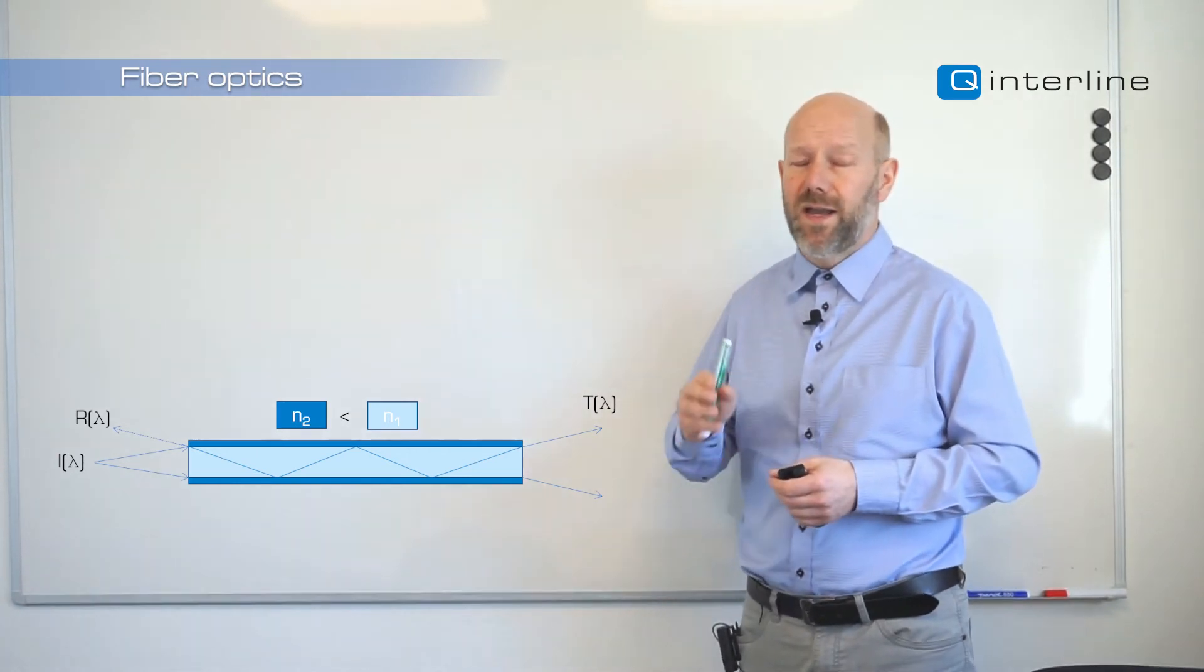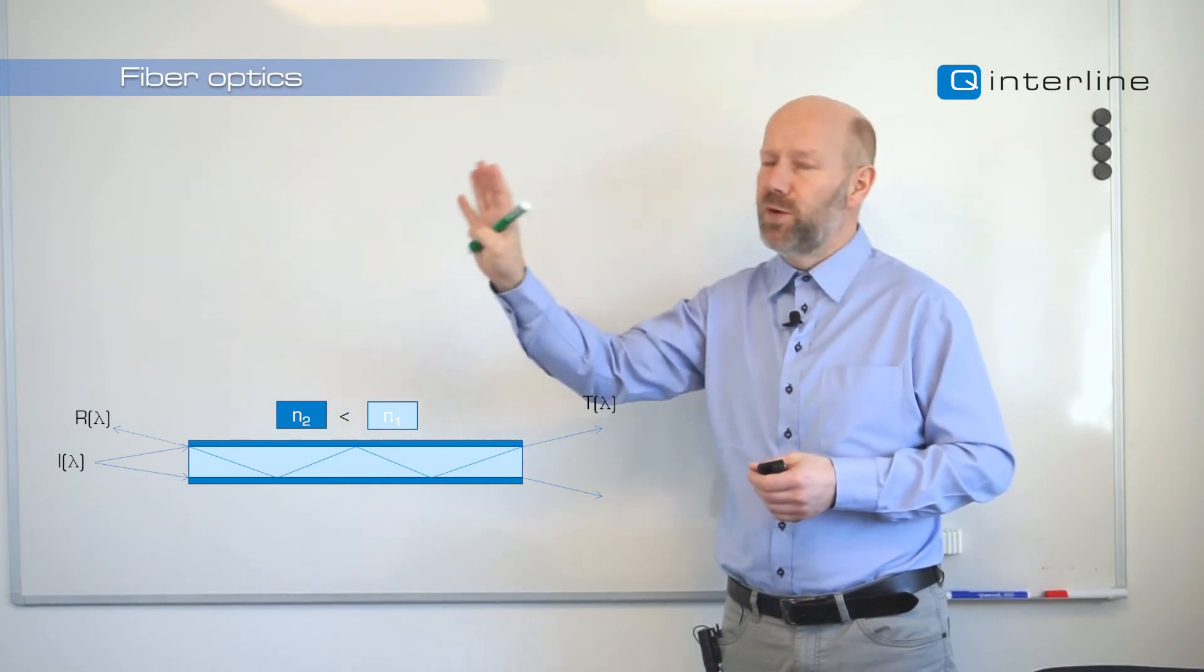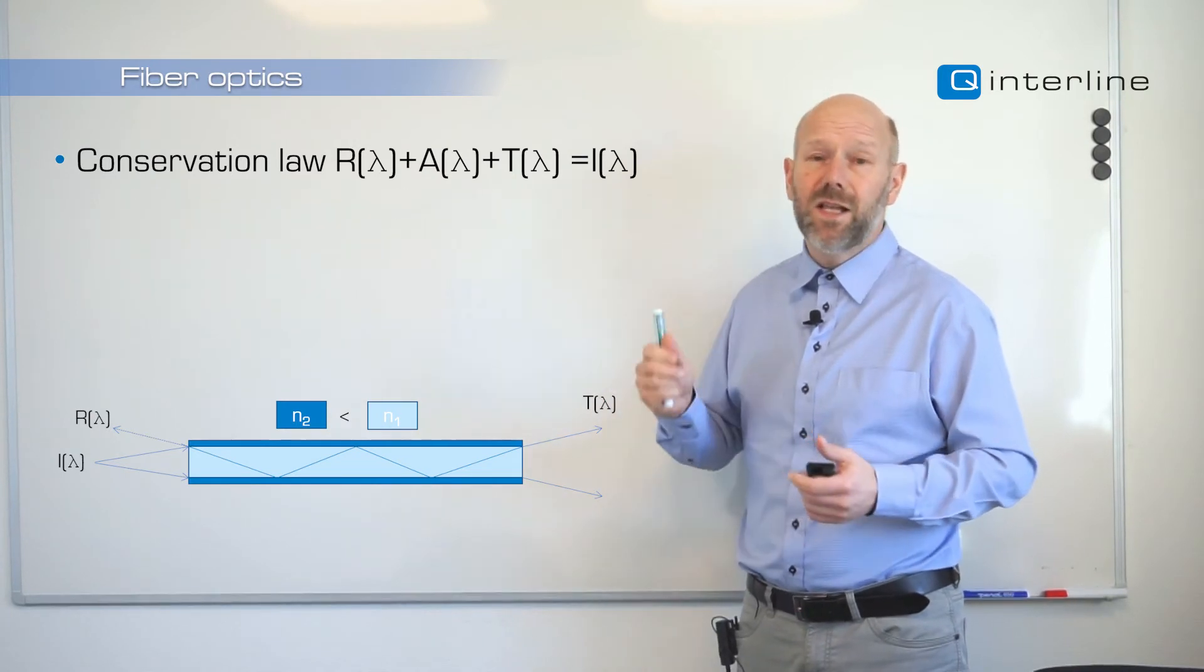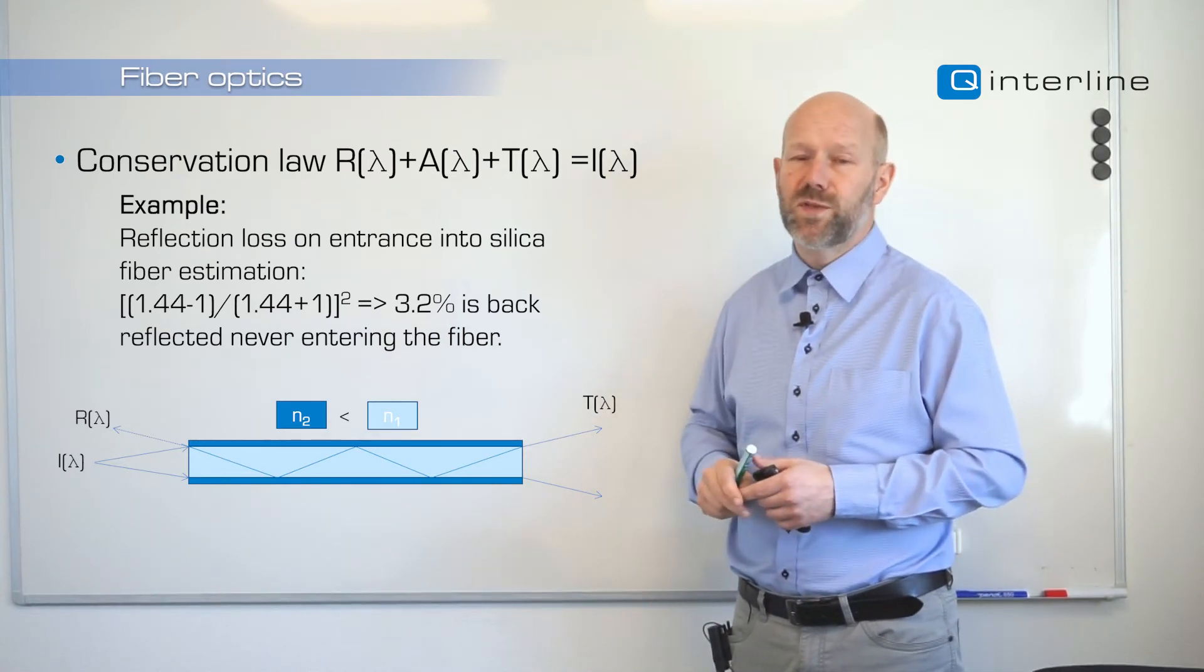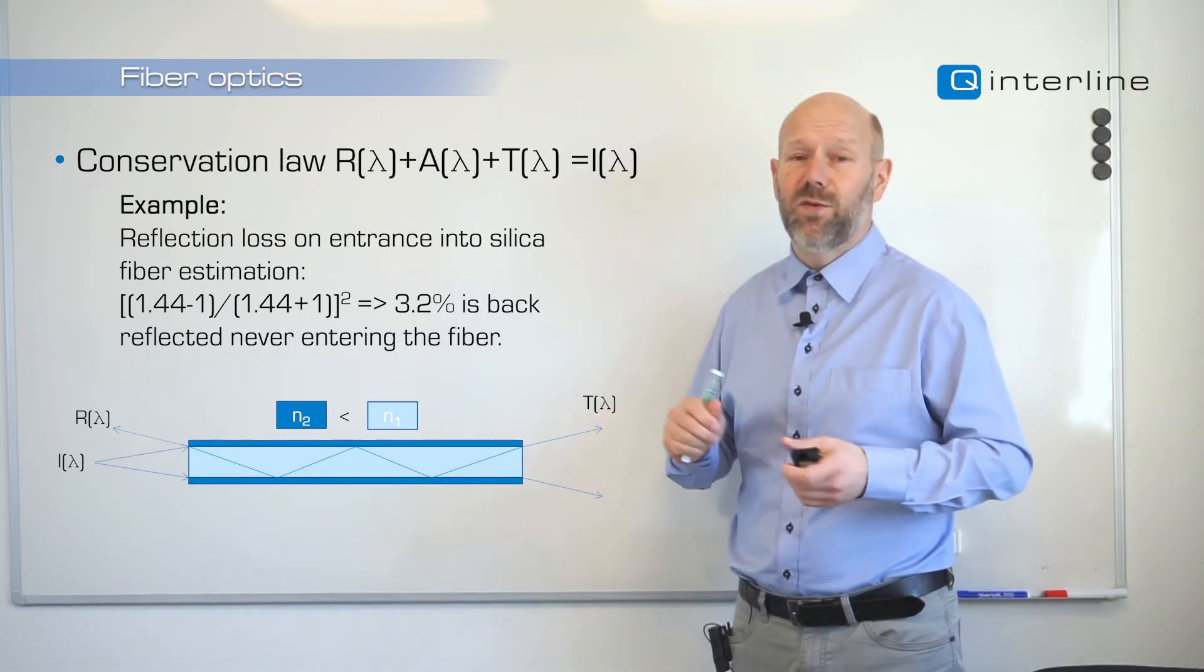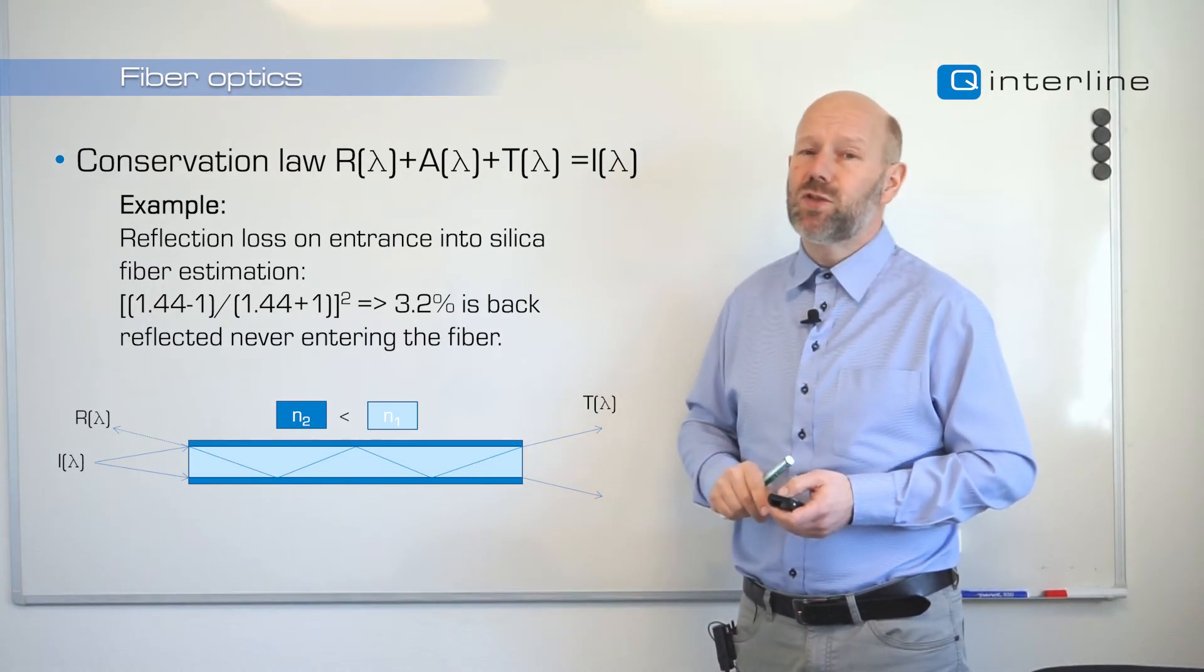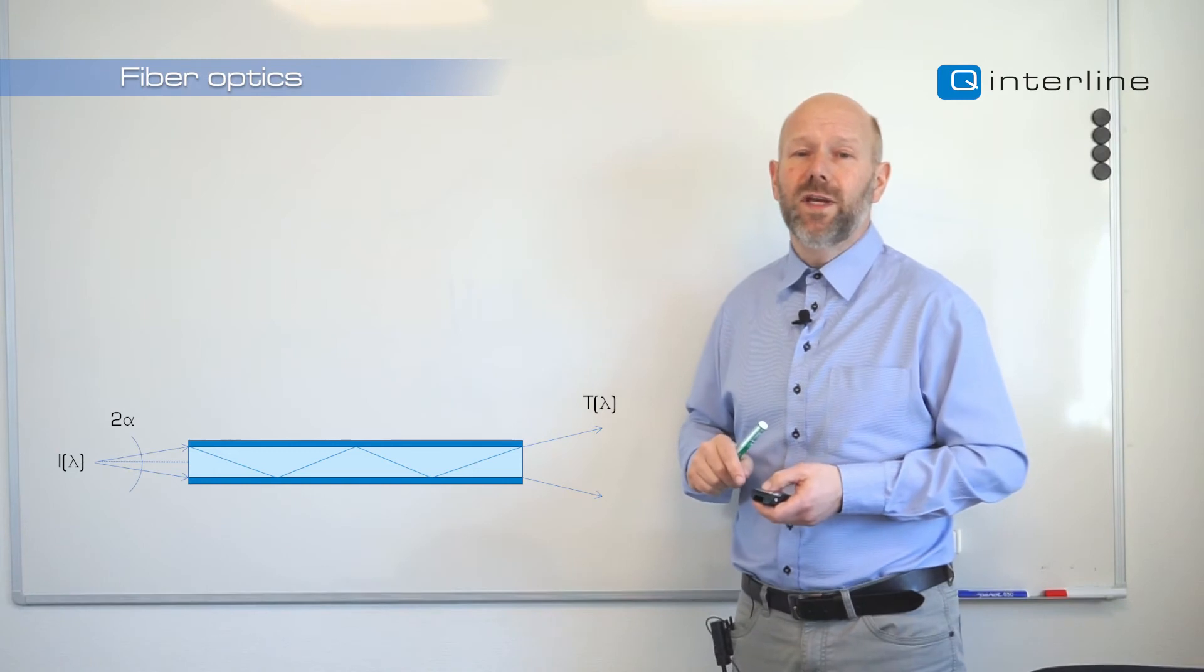Let's look at a few of the losses that will happen. They are either lost by reflection on the entrance, absorption in the fiber, then further on light will be absorbed by the sample. The reflection loss at the entrance can be estimated by this formula and if we calculate it we can see that roughly 3.2 percent of the light will never enter the fiber. So roughly 97 percent of the light enters the fiber but now it will be absorbed along the road. Not all wavelength will travel at the same easiness.